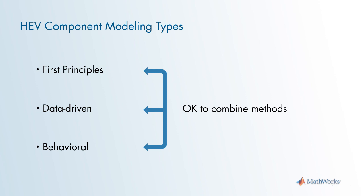Keep in mind that it is very common to mix and combine these modeling techniques. For example, some first principle models utilize parameters based on data from lookup tables. The equivalent circuit battery example combines first principles — the equivalent circuit network — with data from lookup tables for the voltage, resistor, and capacitor elements, which produces the dynamic behavior of a real battery.